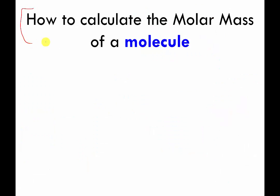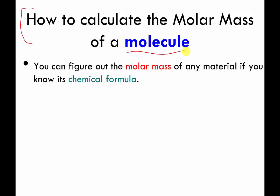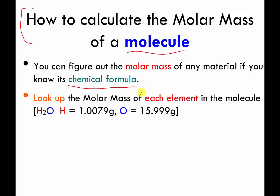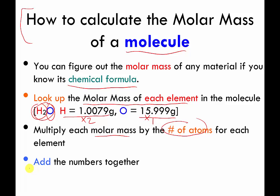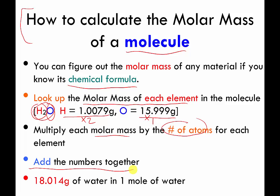Here's a summary of how to figure out the molar mass of a molecule. As long as you know its formula, you can figure it out. You look up the molar mass of each element in your molecule. If we were doing water and wanted to be precise: the molar mass of hydrogen is 1.0079 grams and the molar mass of oxygen is 15.999 grams. You multiply each molar mass by the number of atoms of that element in your molecule — hydrogen times 2, oxygen times 1 — then add the numbers together. Done more carefully, the molar mass of water is 18.014 grams, so about 18 grams.